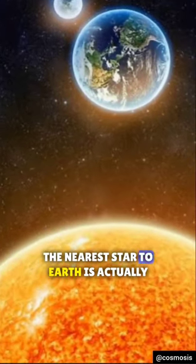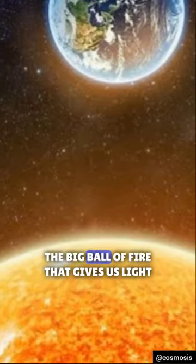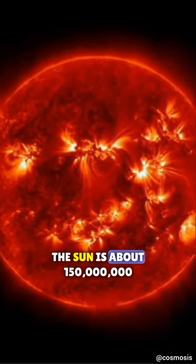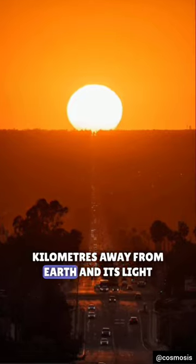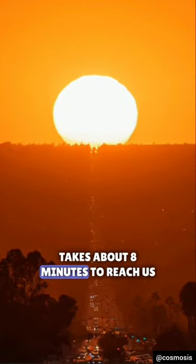The nearest star to Earth is actually the Sun, the big ball of fire that gives us light and heat every day. The Sun is about 150 million kilometers away from Earth, and its light takes about 8 minutes to reach us.